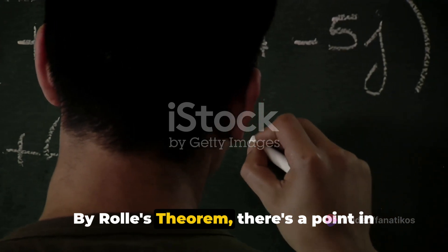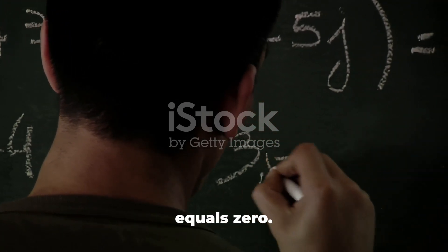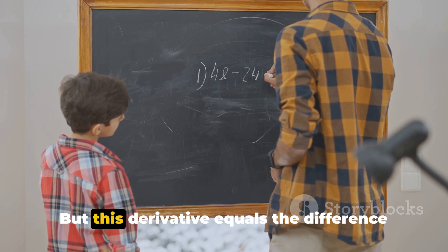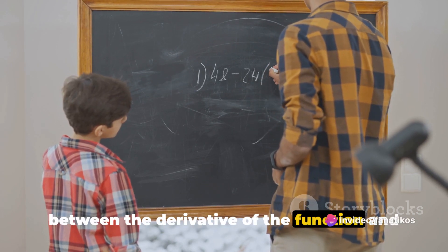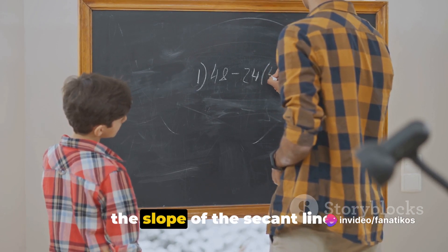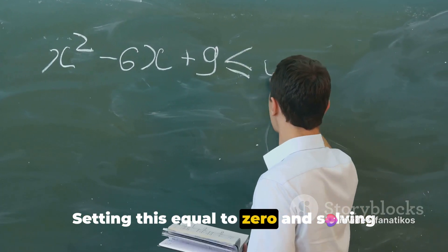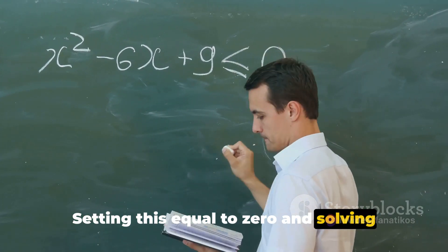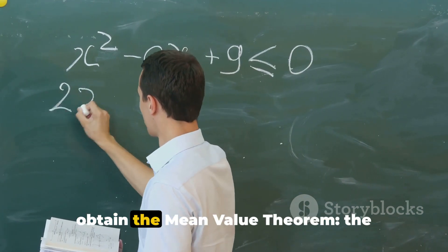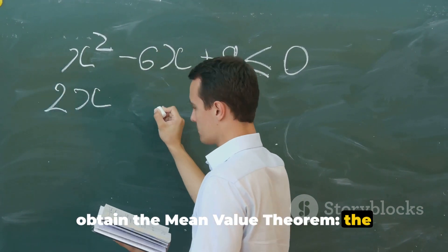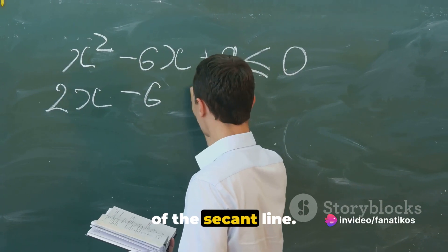By Rolle's theorem, there's a point in the interval where the derivative of h equals zero. But this derivative equals the difference between the derivative of the function and the slope of the secant line. Setting this equal to zero and solving for the derivative of the function, we obtain the mean value theorem: the derivative at some point equals the slope of the secant line.